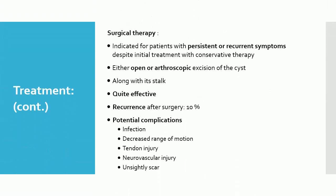Surgical Therapy: Surgical treatment is suggested for patients with persistent or recurrent symptoms despite initial conservative therapy. Surgical removal entails either open or arthroscopic excision of the cyst along with its stalk. Surgery is generally quite effective; however, if not properly removed, the ganglion may recur postoperatively. Approximately 10% recur with either standard or arthroscopic surgery. Potential complications include infection, decreased range of motion, tendon injury, neurovascular injury, and an unsightly scar.